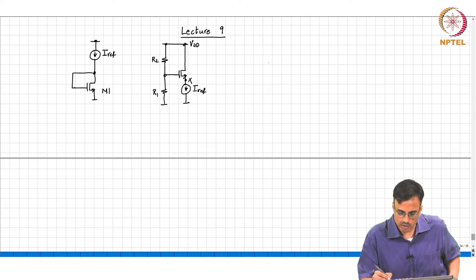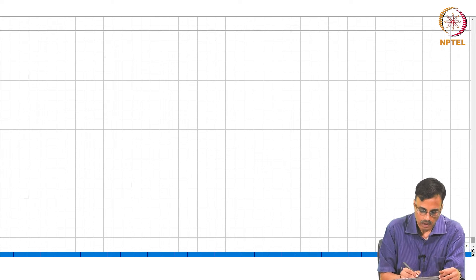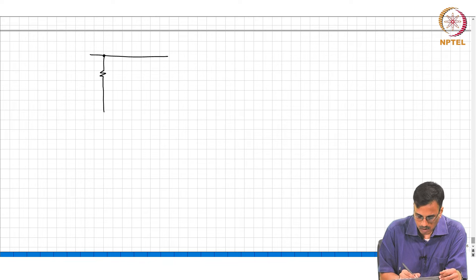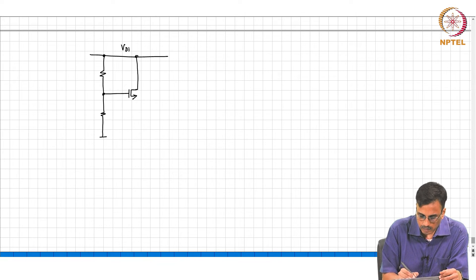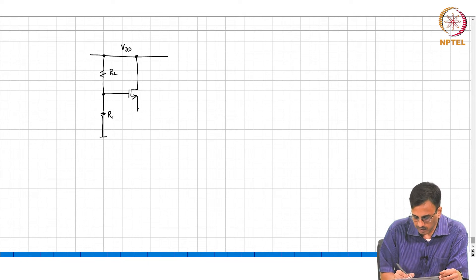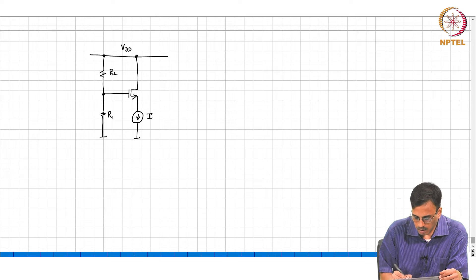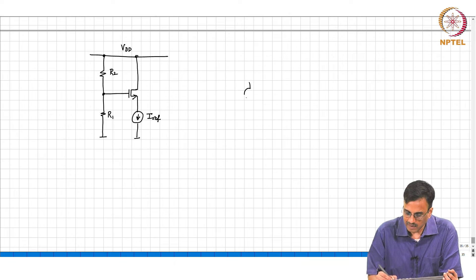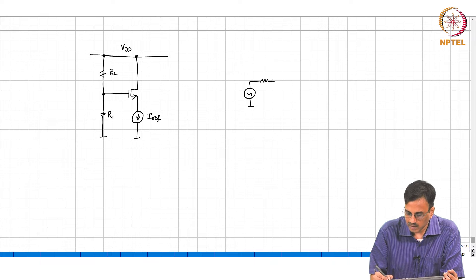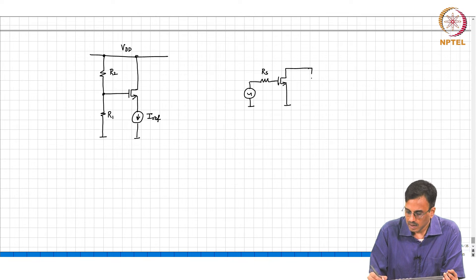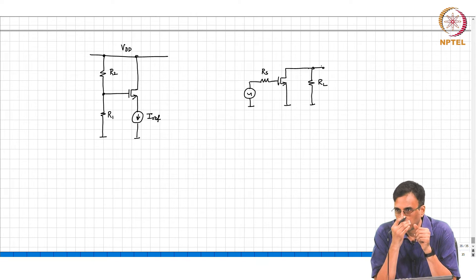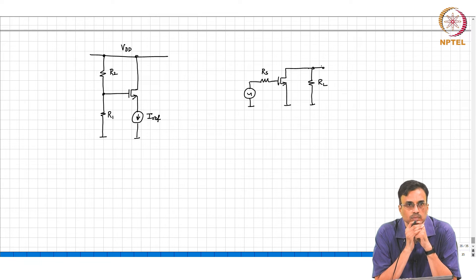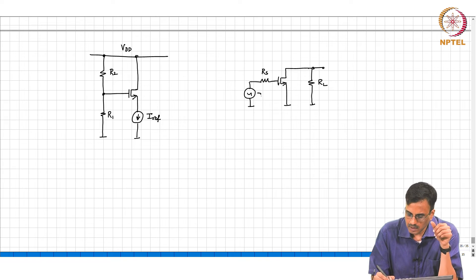This is the bias network. So now let us complete the picture and make the common source amplifier. This is the bias picture: VDD, R1, R2, and this is the current source. Now for incremental signals, we need to make the system look like this. This is RS, this is the transistor assumed to be operating in saturation, and we need the incremental network to look like this. This is the model for the common source amplifier. So what do we do? Where do we put it? Here is the common.